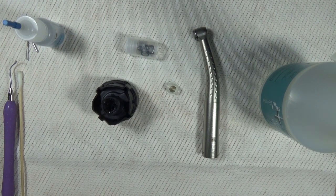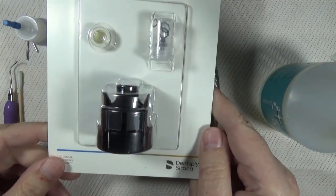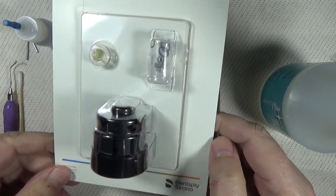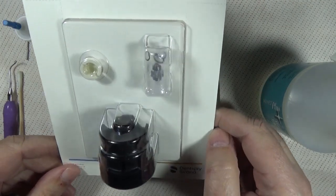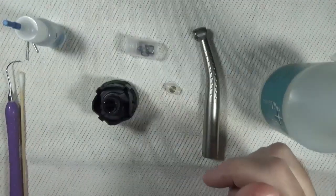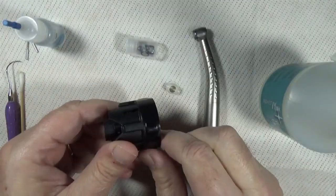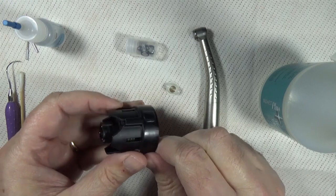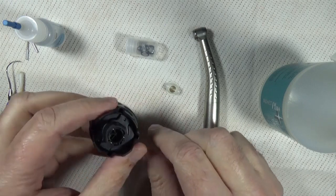We're going to use this replacement turbine kit from Dentsply Serona Midwest. It has all our components in. Taking these parts out, this black part is the torque tool to remove and install the push-button cap.